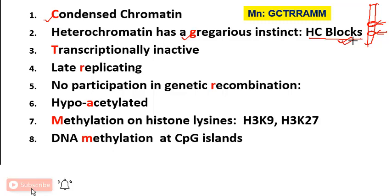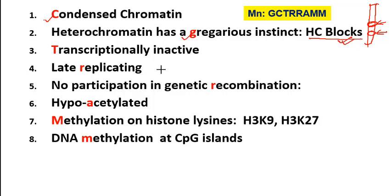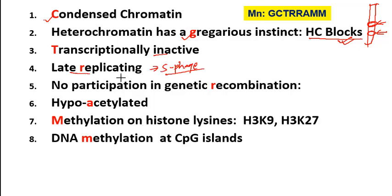The third property is that heterochromatin is transcriptionally inactive — that is a very important property. Even if there is a gene in heterochromatin, it is clumped and inactive. Additionally, heterochromatin is the last to replicate during the S phase of the cell cycle. For example, centromeric heterochromatin will be the last to replicate.